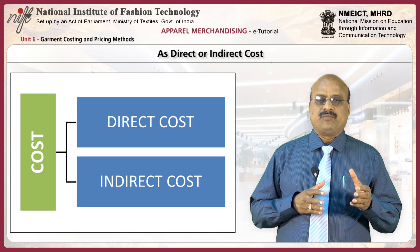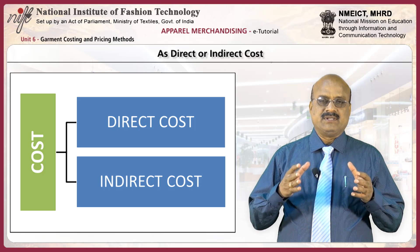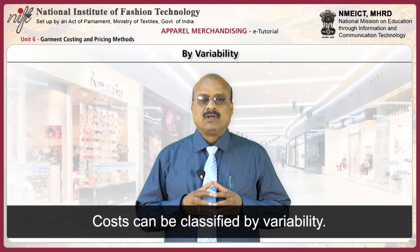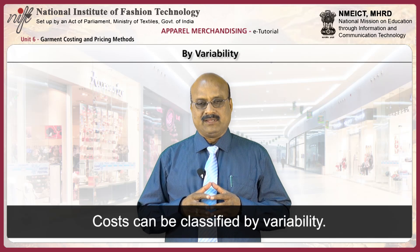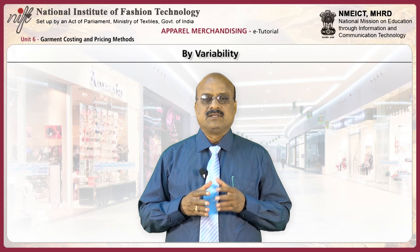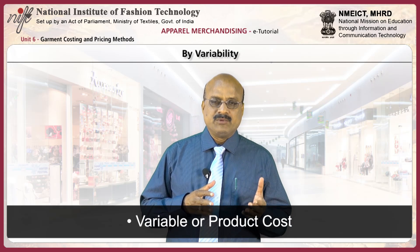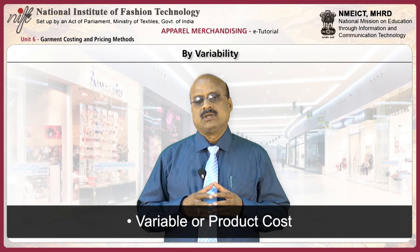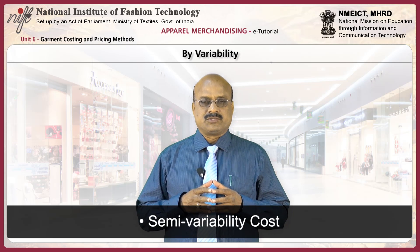For example, fabric is a direct cost and office rental is an indirect expense. Costs can be classified by variability such as fixed or period cost, variable or product cost, and semi-variable costs.